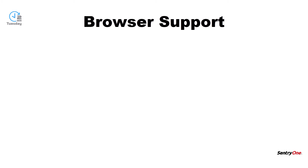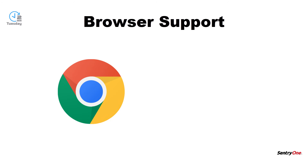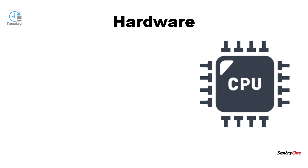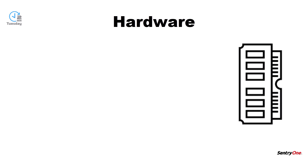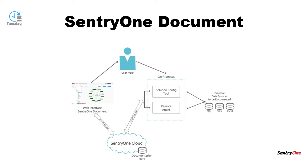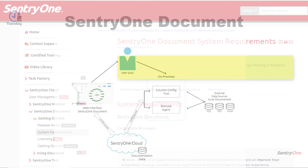SentryOne Document supports both Chrome and Edge browsers. As far as hardware goes, we recommend any relatively recent 64-bit processors. You will also need at least 8 gigabytes of RAM. SentryOne Document utilizes a remote agent to generate snapshots and documentation for the data sources you are monitoring in your environment.